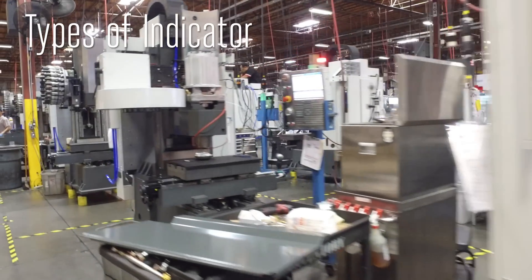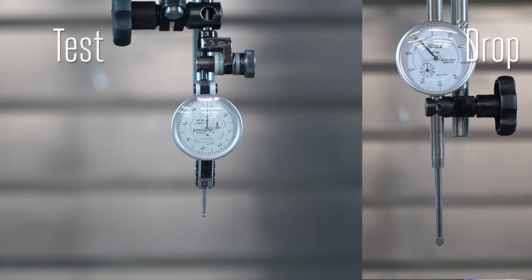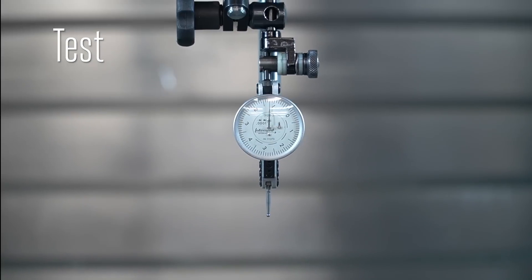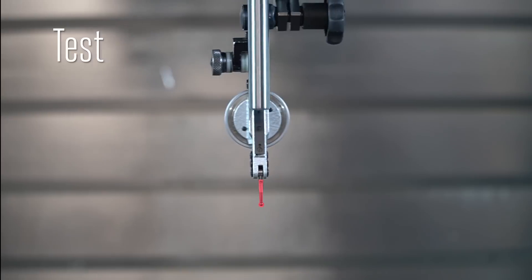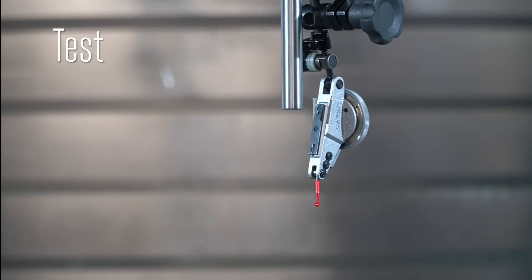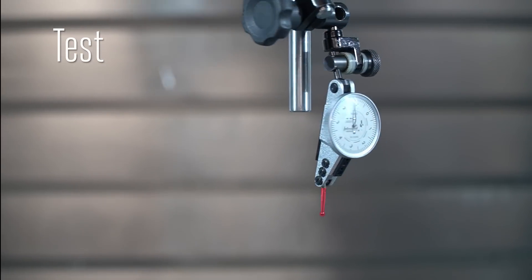Here at the Haas factory, we use two types of indicators, test indicators and drop indicators. The test indicator, often called a dial indicator, uses this lever-style arm, called a stylus, to convert very small lateral movements into a rotary reading on the dial.